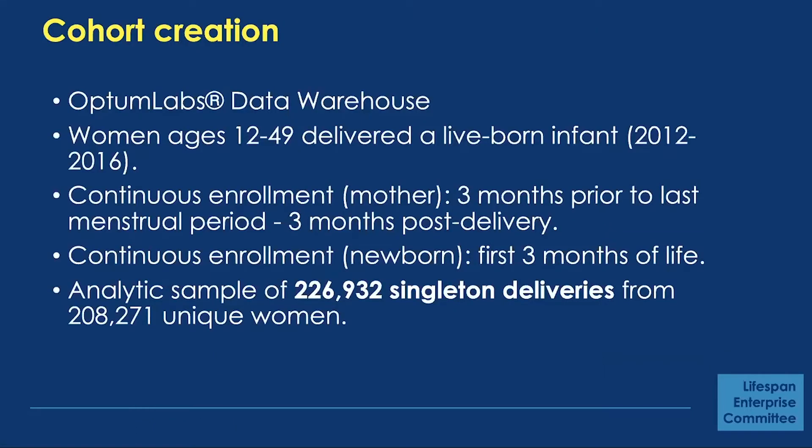We used data from an administrative claims dataset, the Optum Labs Data Warehouse. After sampling women with live-born infants and applying continuous enrollment criteria, we ended up with a sample of 227,000 deliveries, which we were really excited to use because this was a much larger dataset than we had previously worked with for trajectories.